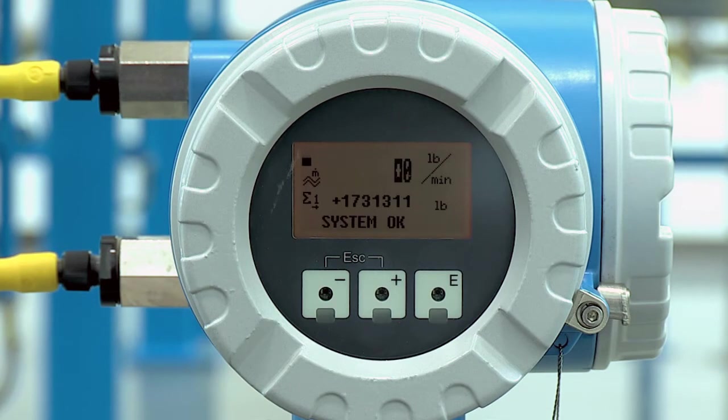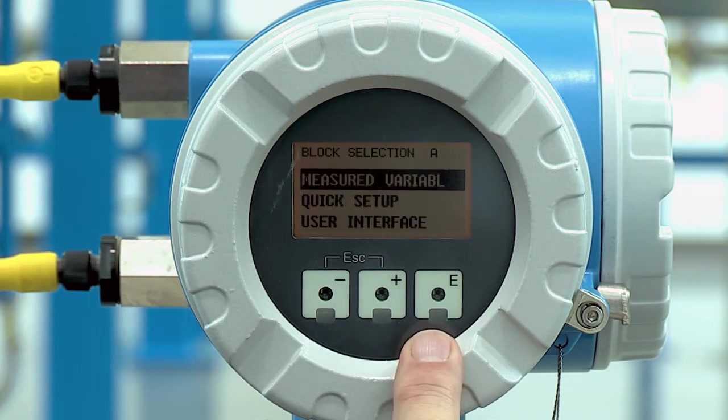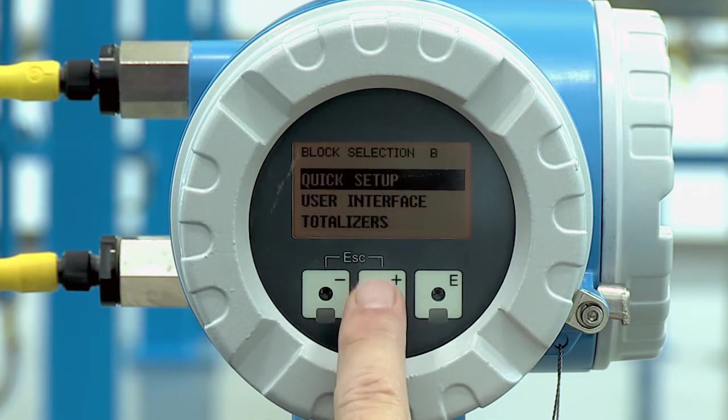In this video we're going to demonstrate how to turn on a 4 to 20 output simulation mode. Let's go through once again. Start with the enter button to get us into the programming mode, now we just plus down.